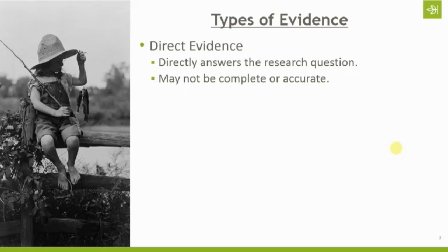Direct evidence means it directly answers the research question. If I ask when was John Smith born and I find a census record that tells me how old he is, that is direct evidence. Now that evidence may not be complete — it just gives me a general year, not a specific date. It might also not be accurate. If I ask who are the parents of John Smith and find a death certificate listing his parents as Thomas Smith and Mary Williams, Mary Williams may not be his mother. Direct evidence directly answers the research question, but it might not be complete or accurate, which is why other types of evidence are sometimes needed.